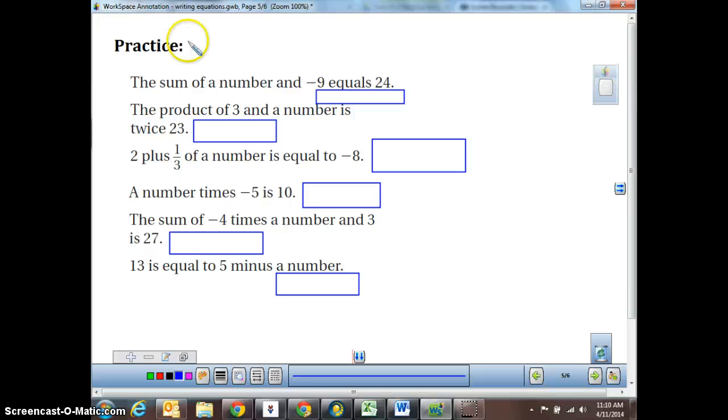So, here we have the sum of a number and negative 9 equals 24. The sum means addition. So we've got the sum of a number. So we've got a number plus a negative 9 equals 24. Equals 24, it tells us. So n plus a negative 9 equals 24.